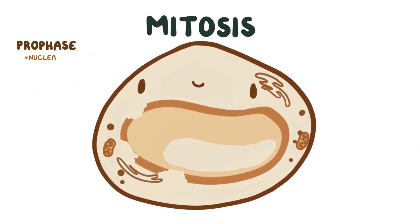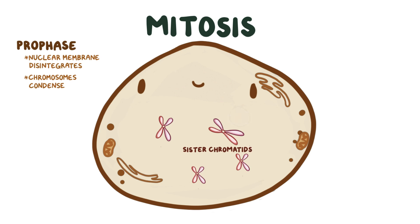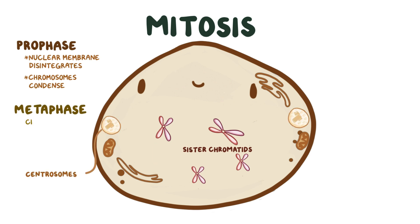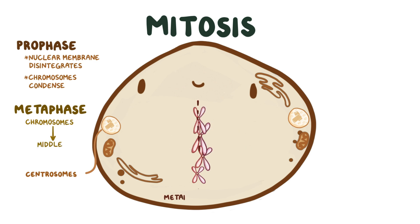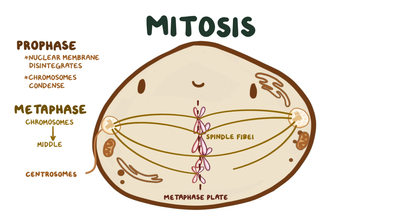During prophase, the membrane around the nucleus disintegrates, and the chromosomes condense and become visible under a microscope, like 46 little X shapes. The condensed sister chromatids make even the tiny Y chromosome in a male look like an X. Inside the cytoplasm, two organelles called the centrosomes migrate to opposite poles of the cell. During metaphase, chromosomes move toward the middle of the cell on a line called the metaphase plate — so think M for metaphase and M for middle. When the chromosomes are in place, each centrosome sends out thread-like projections called spindle fibers that attach to the centromere of each chromosome.